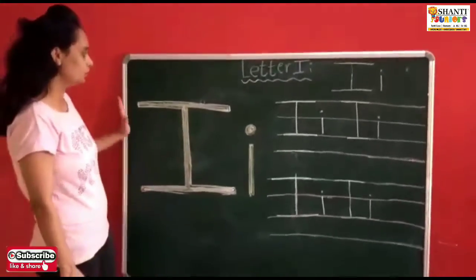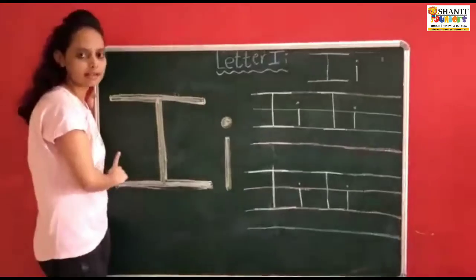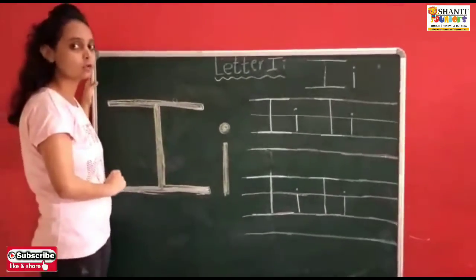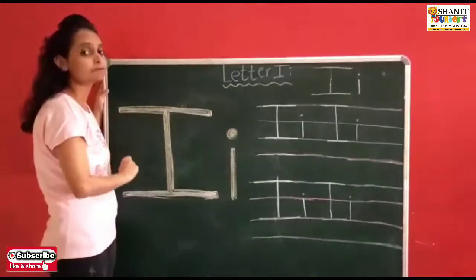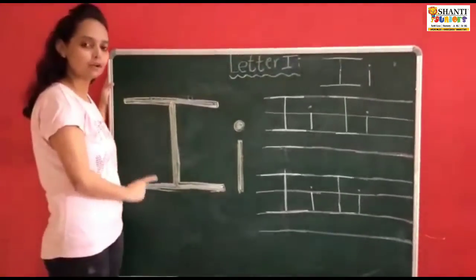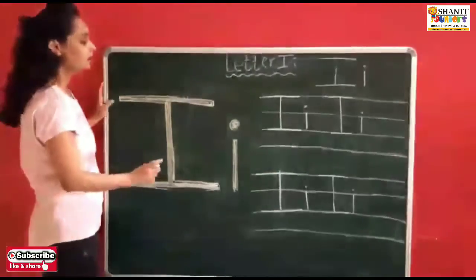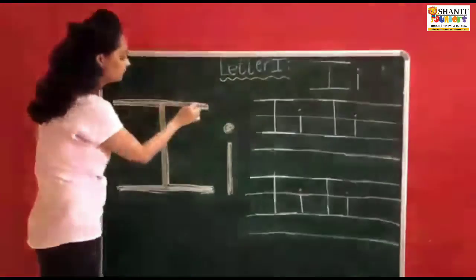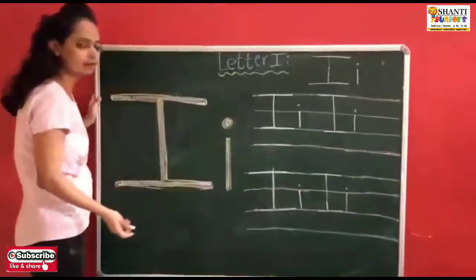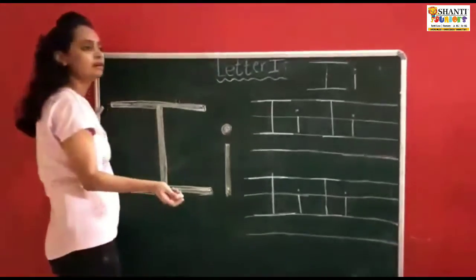So children, do practice at home — writing practice of letter I. In nursery class you have learnt the sound and the words that start with letter I, but in this class you have to do the writing practice. So please practice letter I at home and show me — send your photos and videos to me. So this was letter I, very simple. Quick revision: sleeping line, standing line, and sleeping line — it becomes letter I. And small letter I: standing line and dot — it becomes letter I.